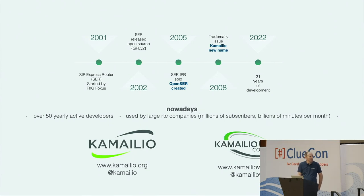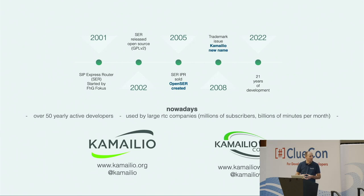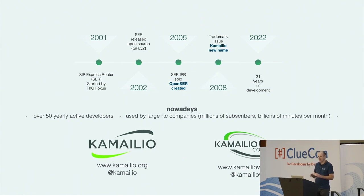For those new to Kamailio, just a bit of clarification on timelines and names. The project started at a research institute in Germany as the SIP Express Router project. After some transformation involving how the institute managed and sold the IPR, we created a branch called OpenSER, which ran into a trademark issue. Practically since 2008 we use Kamailio as the name. It's a quite popular project in carrier-grade telephony and works well with Asterisk and FreeSWITCH for scalability, security, and offloading functions like authentication and registration.